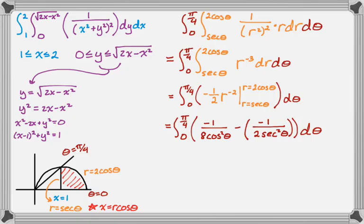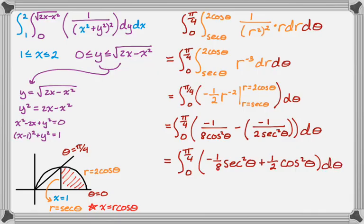And then this, I'm going to rewrite using some trig. So 0 to pi over 4, negative 8, 1 over cosine is secant, so that's negative 1/8 secant squared, and then 1 over secant is cosine, so I get plus 1 half cosine squared of theta. Now I'm going to need a lot more space, so let's move to the next page.